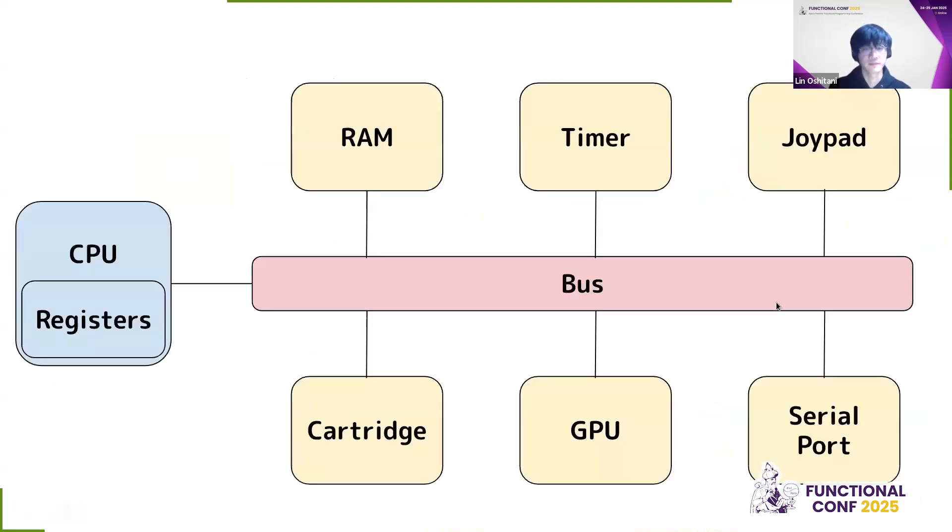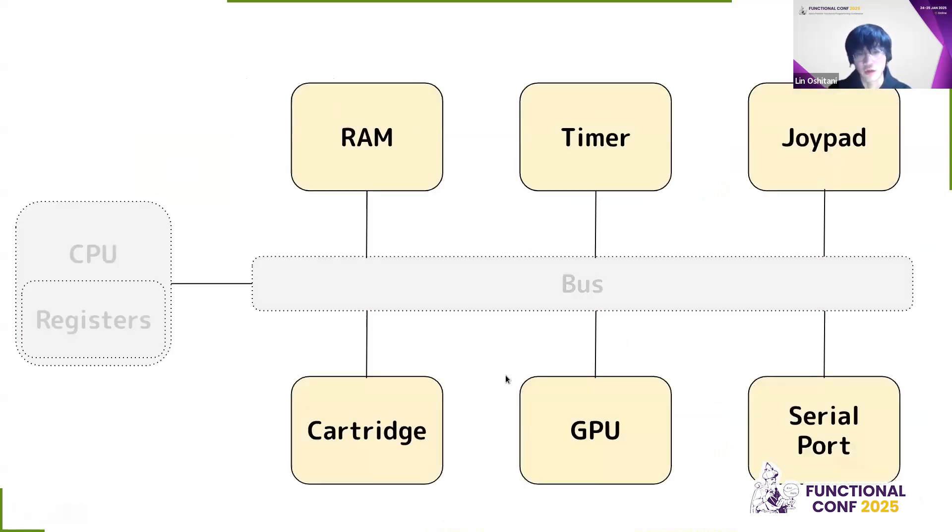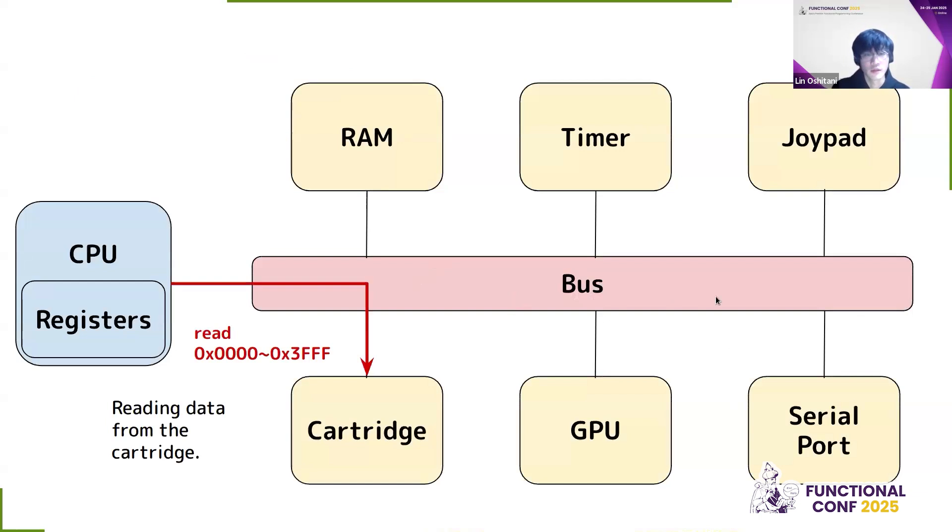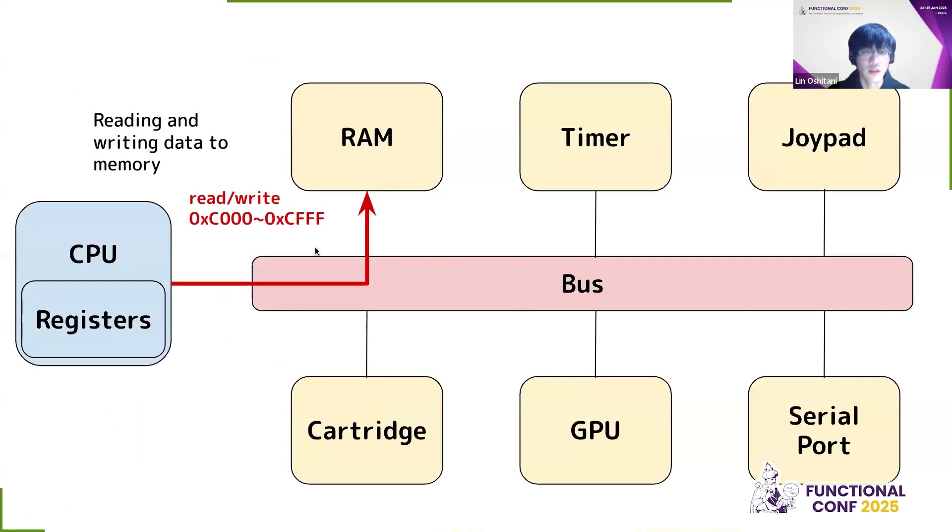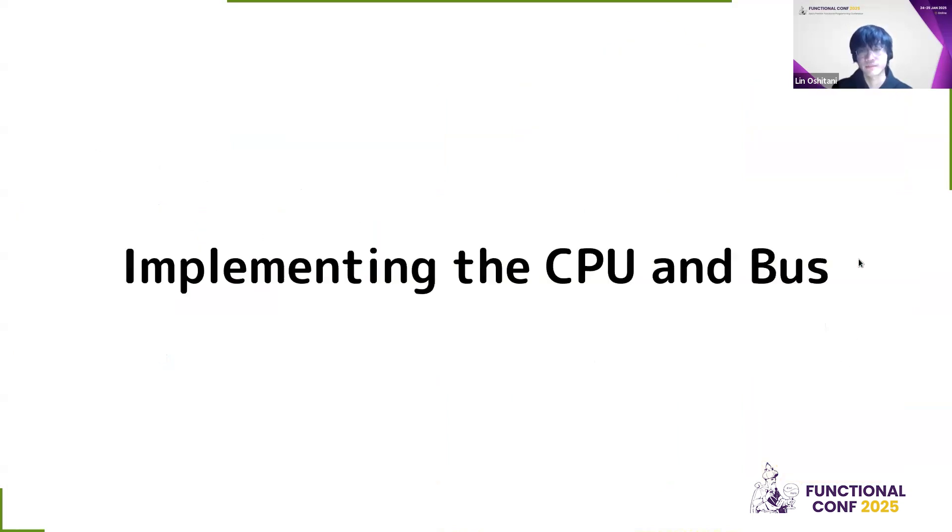Here is the architecture of Camelboy. Camelboy first has a CPU, and within the CPU you have a bunch of registers. And then you have a bunch of IO devices like RAM, timer, joypad, cartridge, GPU, serial port. And sitting in between, you have a bus. So what the bus does, it's like a mediator of connecting the CPU and IO devices. So for example, if the CPU is reading to this address range, then the read will be routed to the cartridge. And then you can read data from the cartridge. Similarly, if you read and write to this address range, then the bus will route those read and writes to the RAM. And for example, if you write to this specific address, then you're connected to the timer. And then you can change the timer speed.